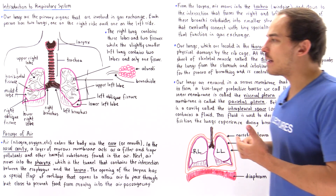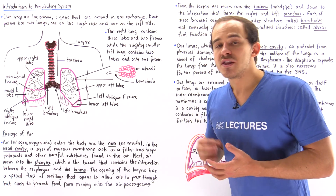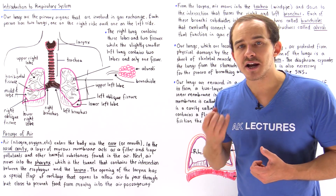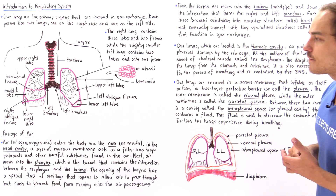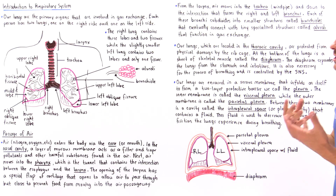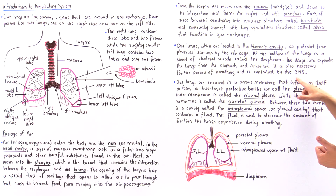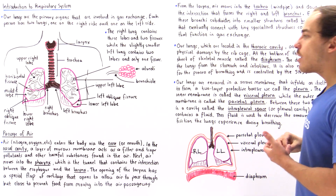Because the diaphragm is a skeletal muscle, that means we have voluntary control of our diaphragm. It is controlled by the somatic nervous system.